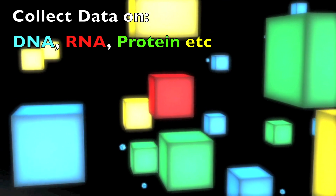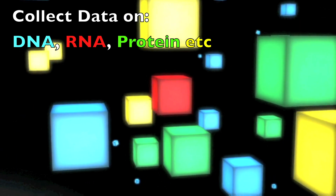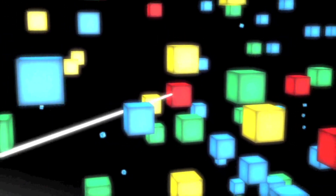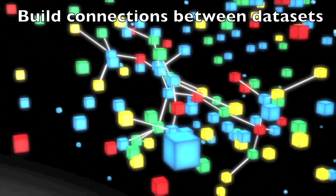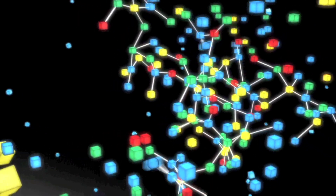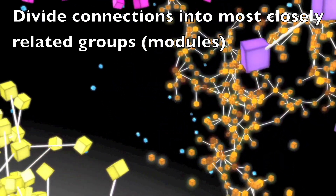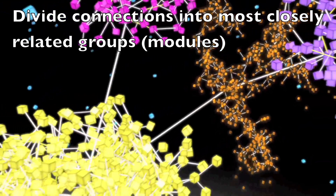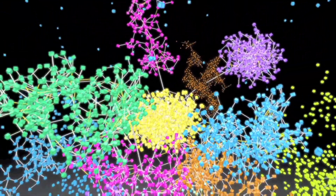Our inputs include DNA, RNA, protein, and other datasets, which are shown by the different color boxes in the video. Different algorithms are used to build connections between these datasets. These connections are then divided into the most closely related groups of connections.